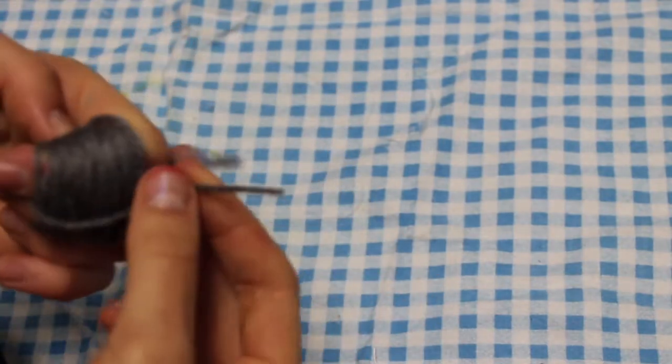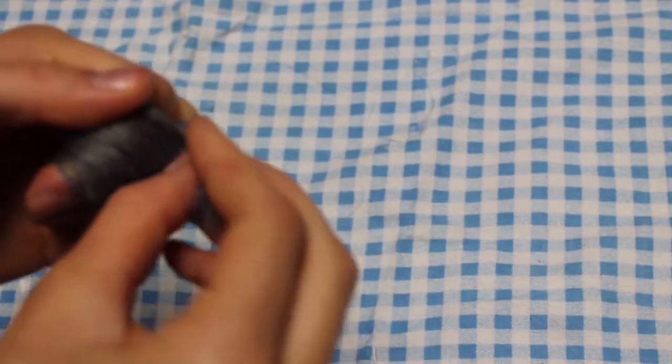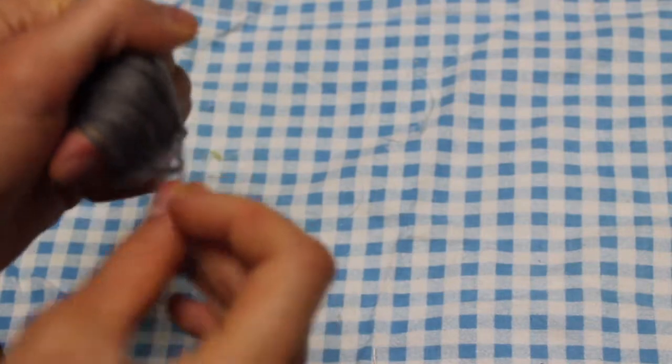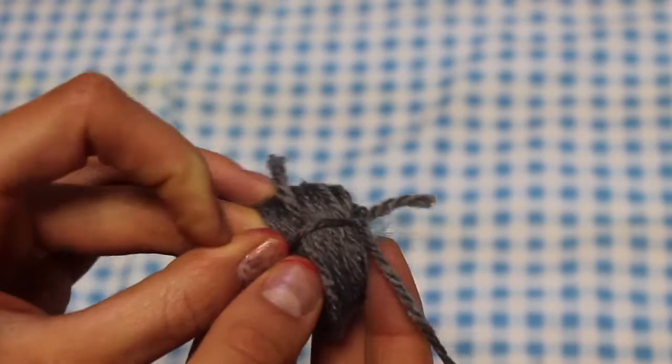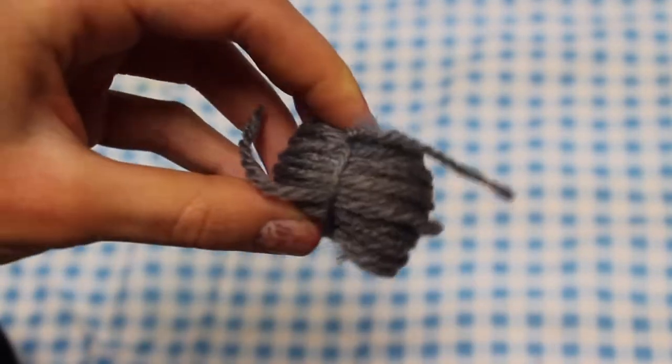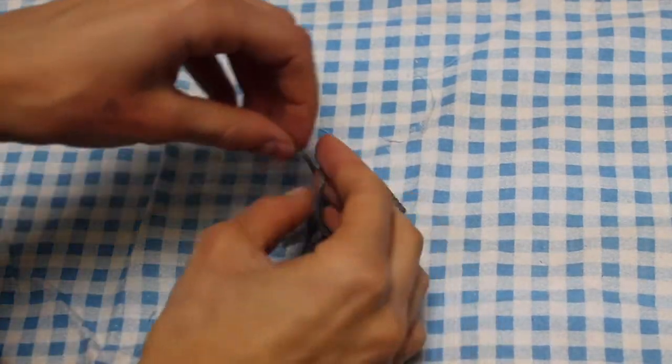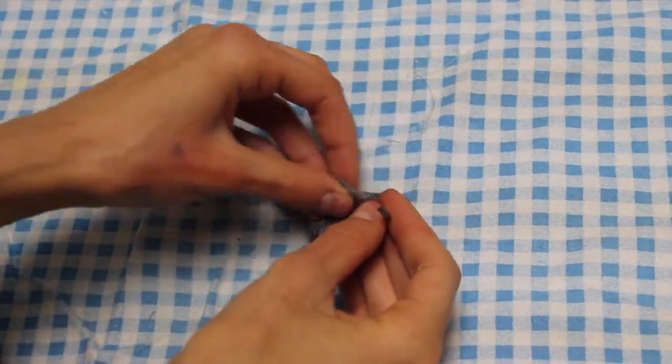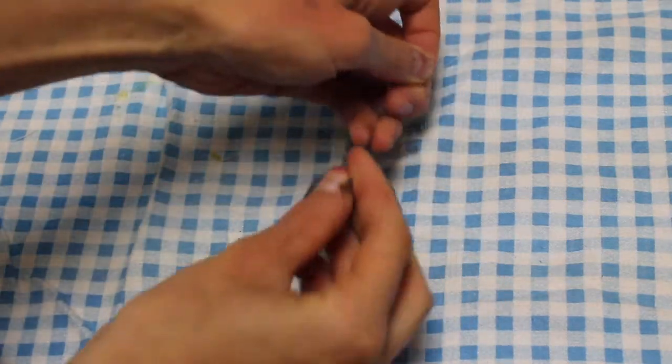Okay, so when you have that tied, you're just going to slide it off. It should be really loose right now, but you're going to take another piece of string and just tie that around there to make it a lot tighter so the pom pom will actually stay together. Make sure you tie this in a double or a triple knot.